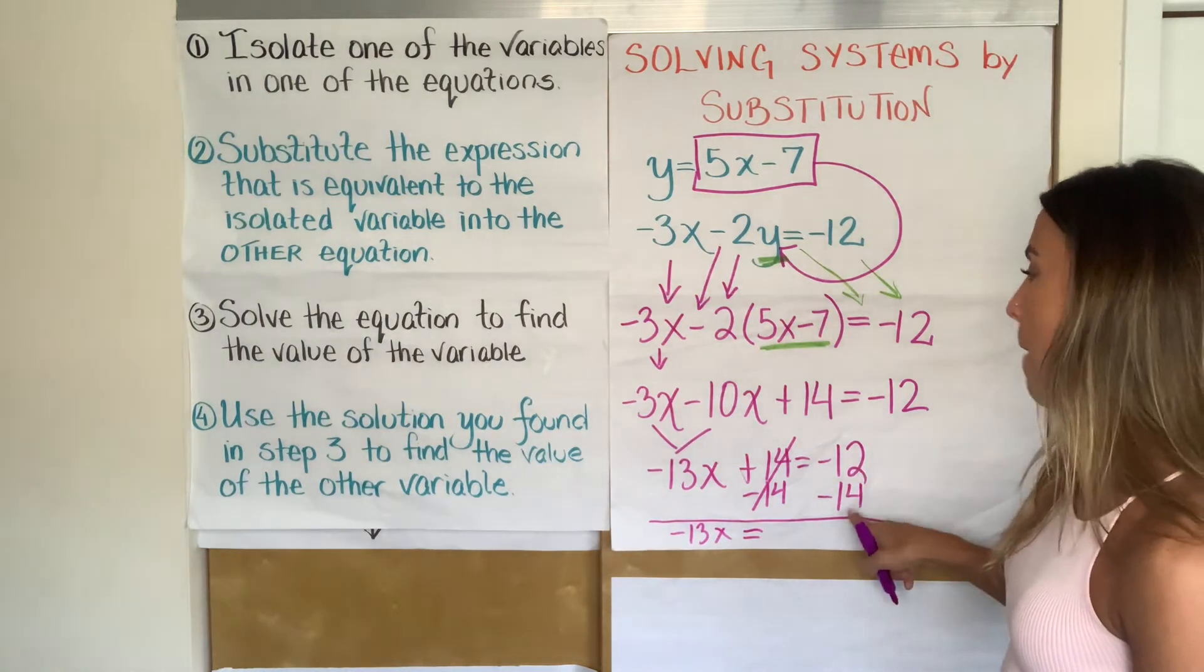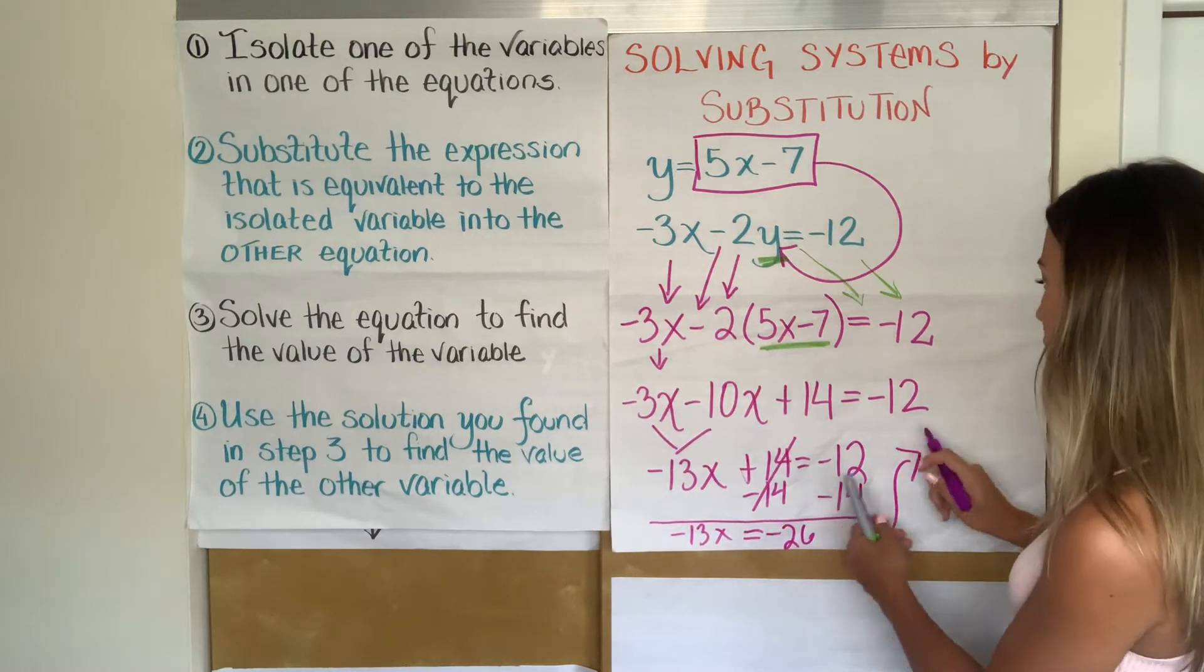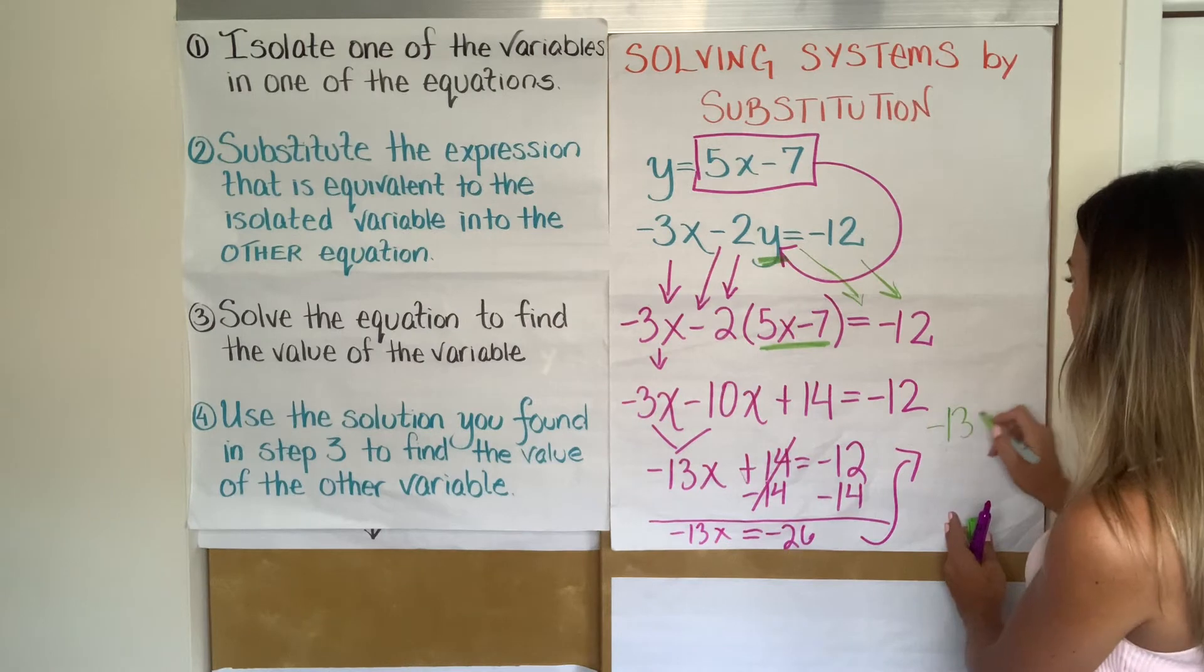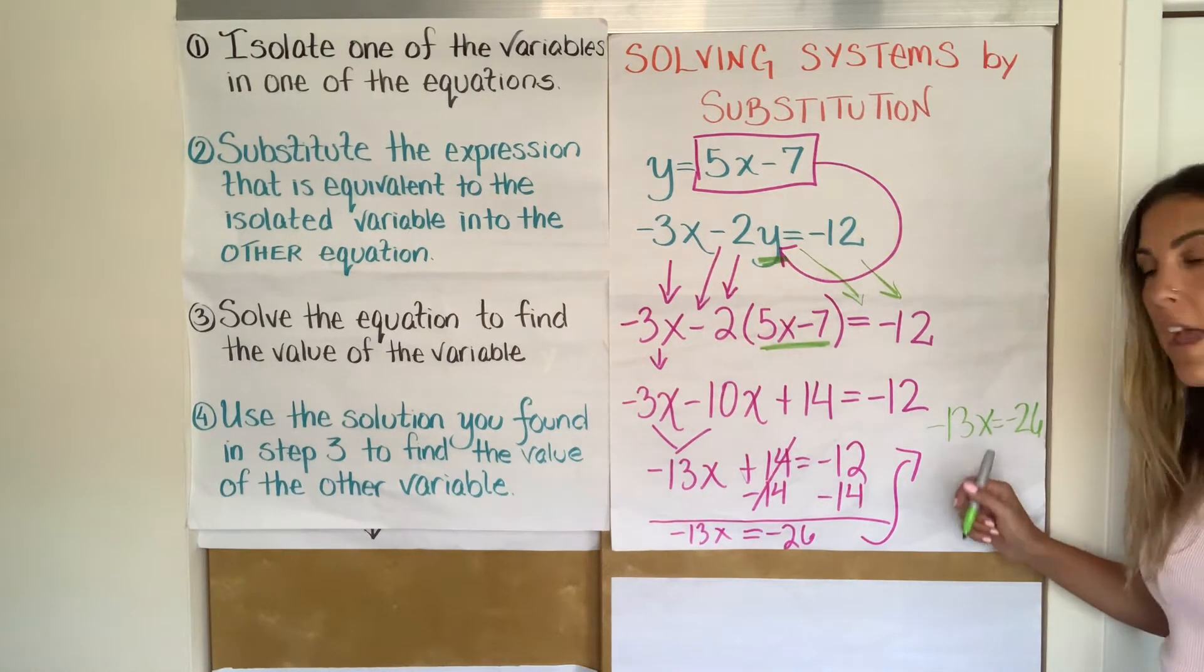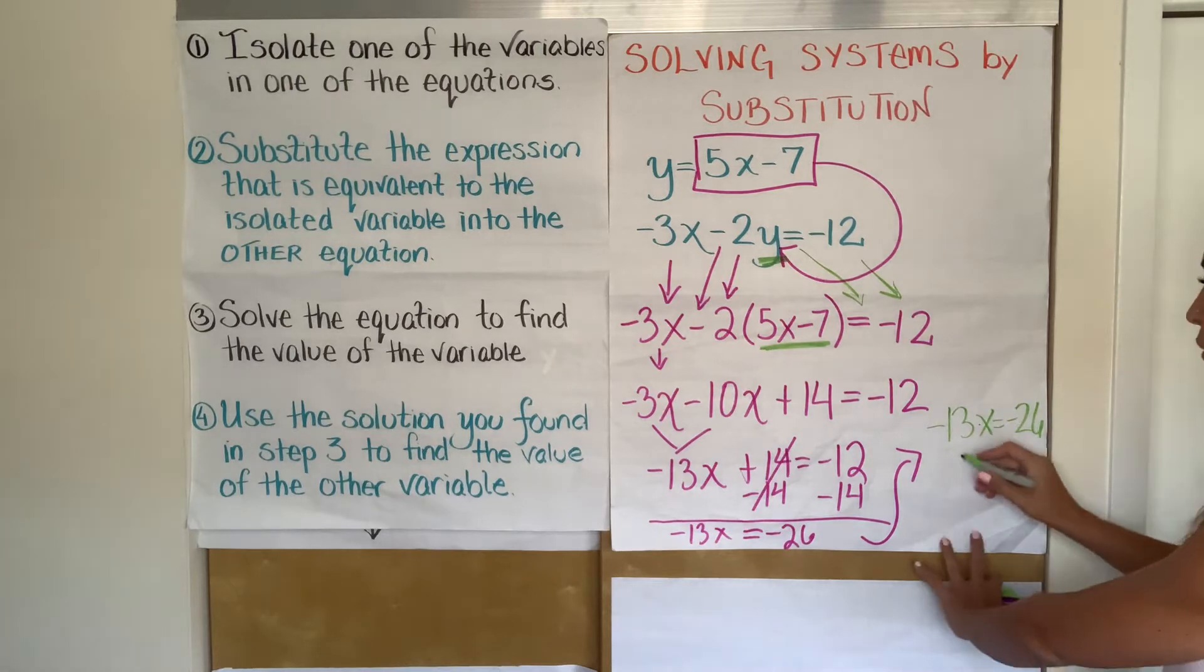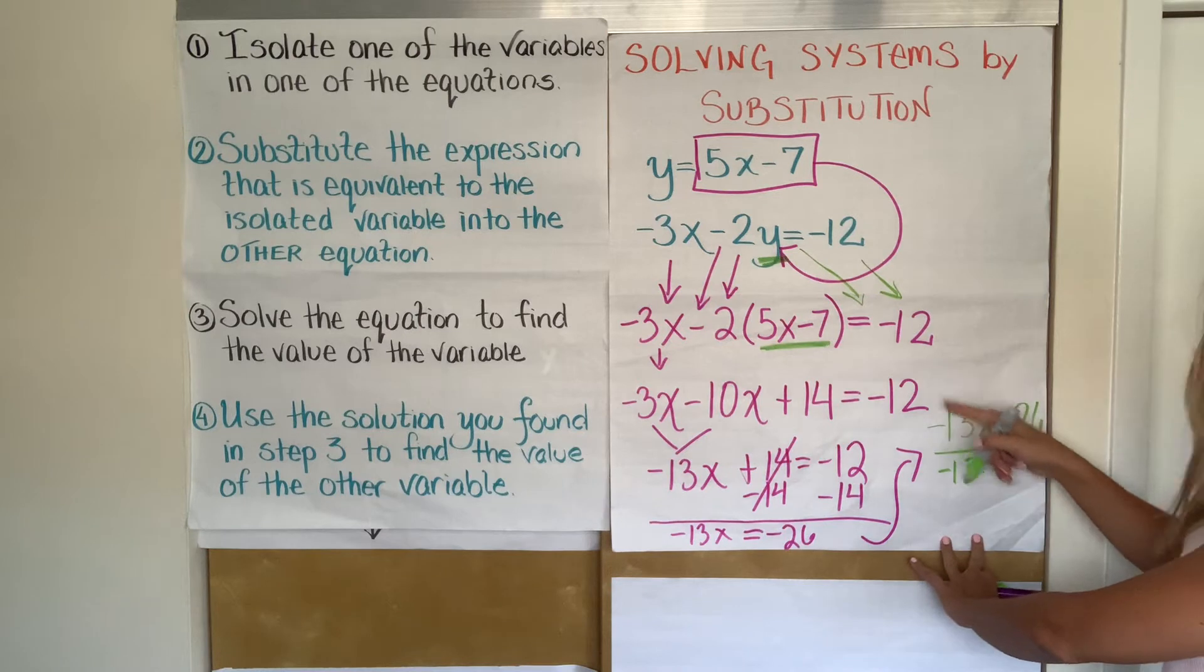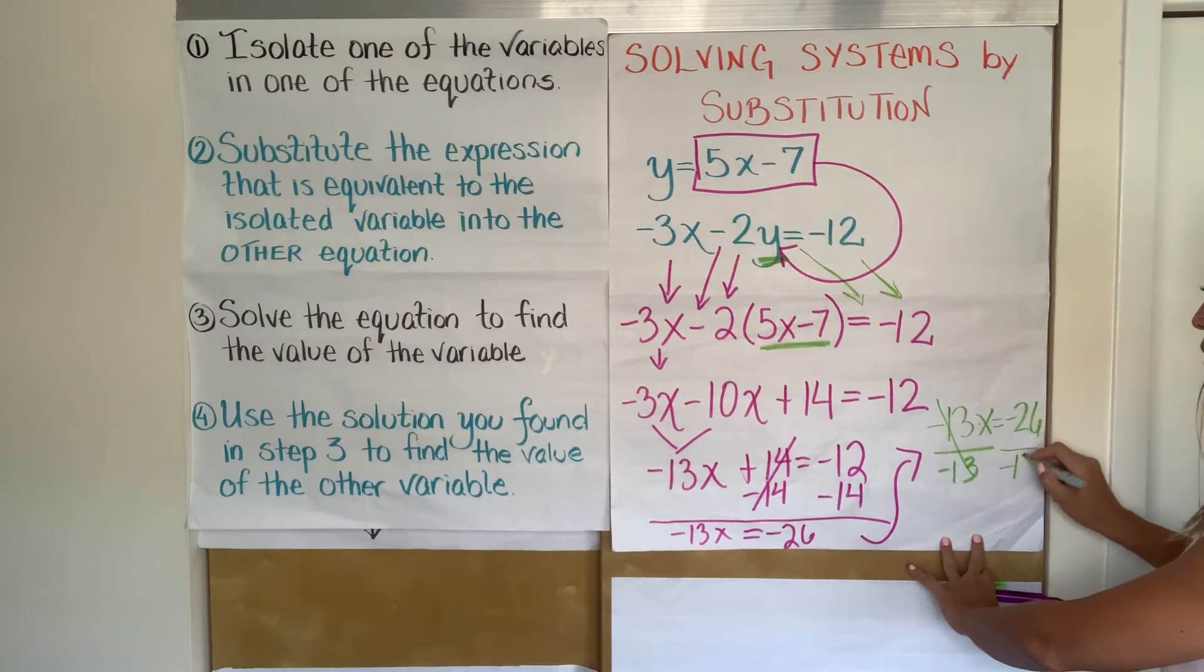Bring down my equal sign. Negative 12 minus 14 is negative 26. I'm going to come up here. I'm going to write it in different colors so it's not confusing. So I'm left with negative 13X equals negative 26. That's a one-step equation now. All I have to get rid of is the negative 13, which is being multiplied by the X. There's nothing in between, so that means multiplication. The inverse of multiplying is dividing. If I divide by negative 13, it'll get rid of it.